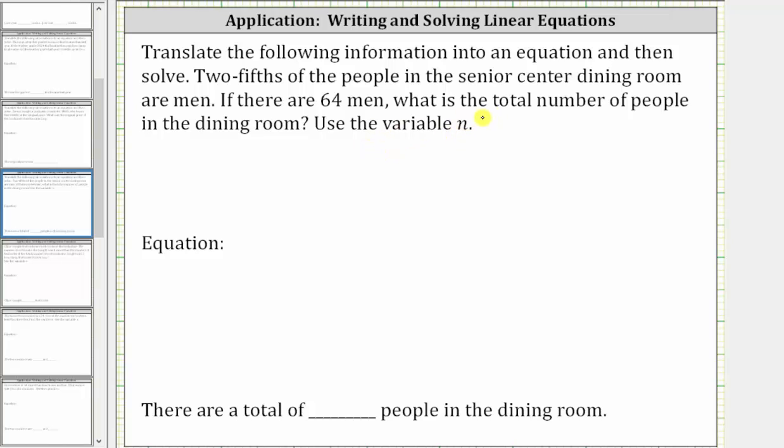Let's let the variable n equal the total number of people in the dining room. And now from here, we know two-fifths of the people in the dining room are men and there are 64 men, which means two-fifths of n, or two-fifths times n must equal 64, which gives us the equation two-fifths n equals 64.